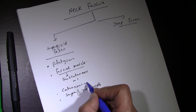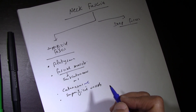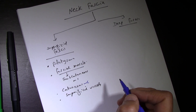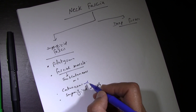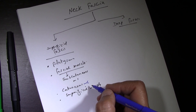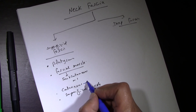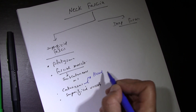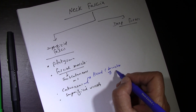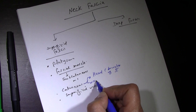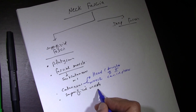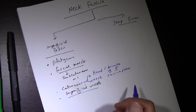Cutaneous nerves in the neck are branches from the cervical plexus — for example, the transverse cervical, lesser occipital, and great auricular nerves. Inside the face, there are several cutaneous nerves which are terminal branches of the trigeminal nerve. So cutaneous nerves in the head are branches of the trigeminal nerve, and in the neck they are branches of the cervical plexus.